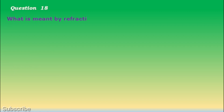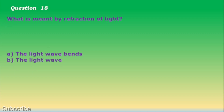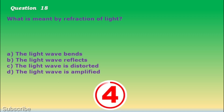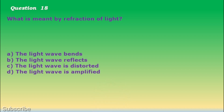Question number 18. What is meant by refraction of light? a. The light wave bends, b. The light wave reflects, c. The light wave is distorted, d. The light wave is amplified. The correct answer is letter a. The light wave bends.